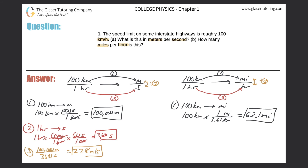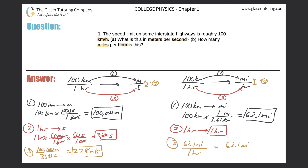For part two, we take one hour and convert it into hours — that's just one hour. Then part three is to do the division: we take 62.1 miles and divide by one hour. That gives us 62.1 miles per hour as the final answer.